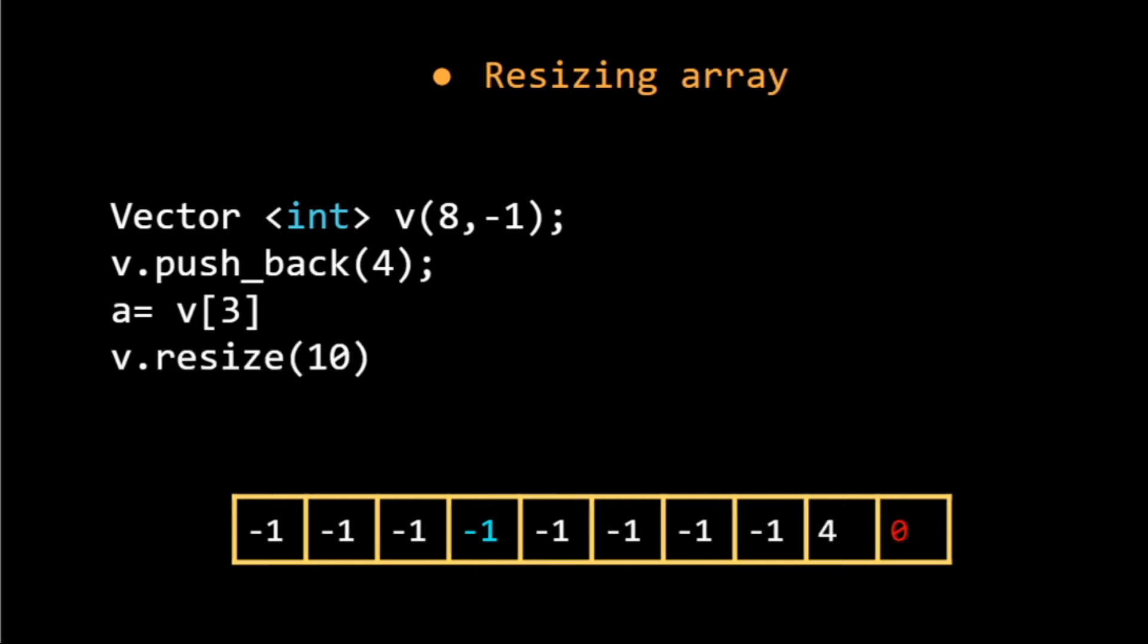We can always resize the array and make it larger or smaller. For example, my vector size was earlier 9 and I have resized it to 10, so it created a new space and initialized it with 0. If suppose I have given it resize(6), it will delete the last four elements and we get the vector with first six elements.